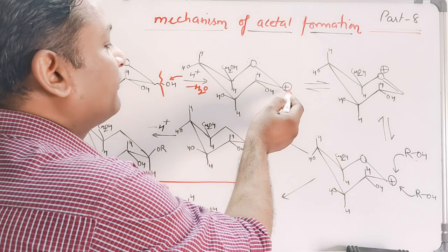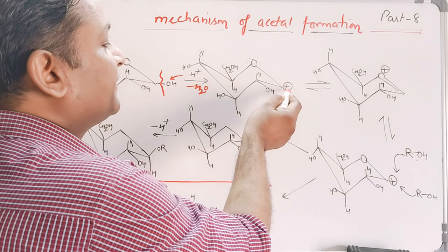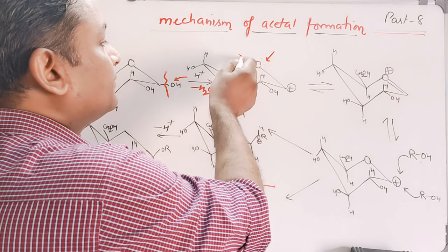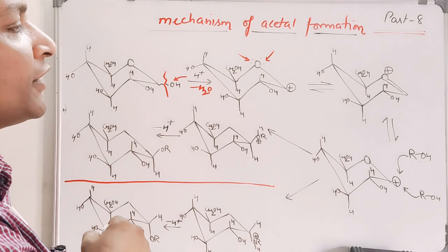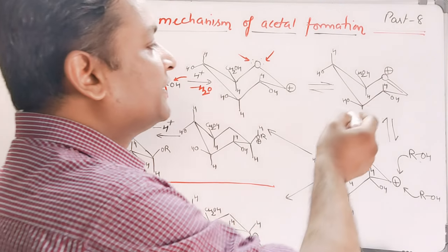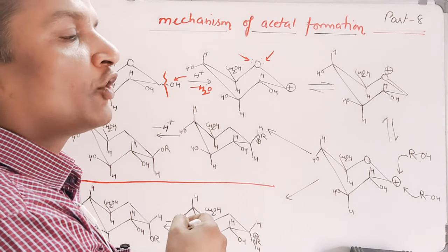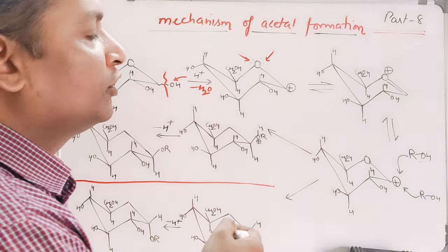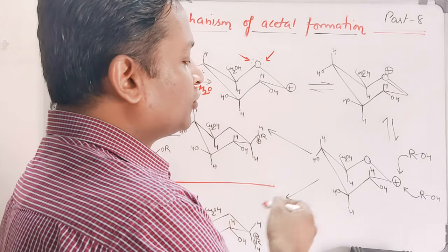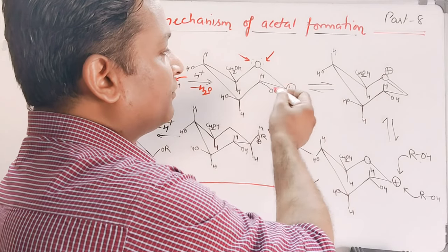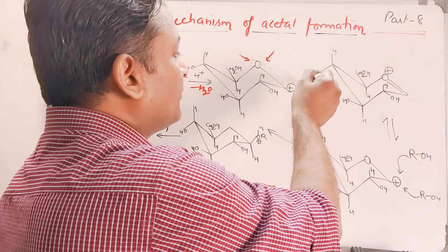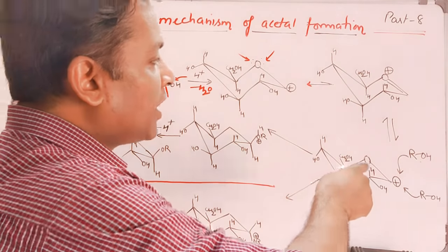After removal of water, we get formation of a carbocation. You can see the carbocation is adjacent to oxygen, and oxygen contains two lone pairs of electrons. These two lone pairs can be delocalized onto the positive charge, giving us a resonance structure. After delocalization of the lone pair of oxygen, the next structure shows positive charge on oxygen. These two structures are possible due to the delocalization of electrons.